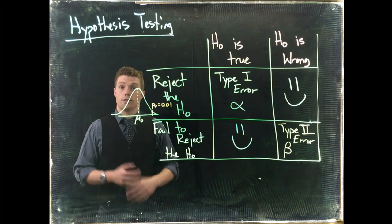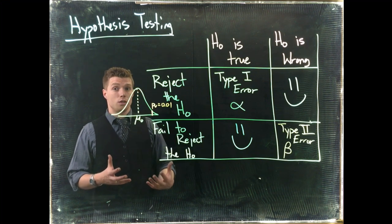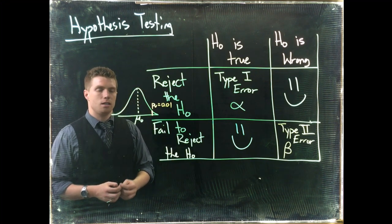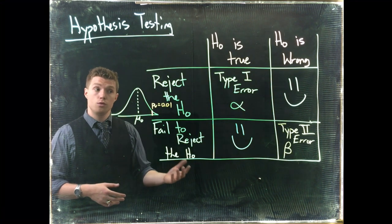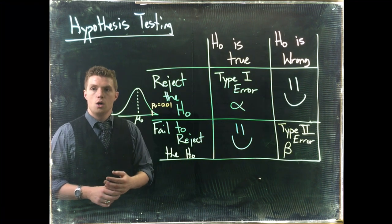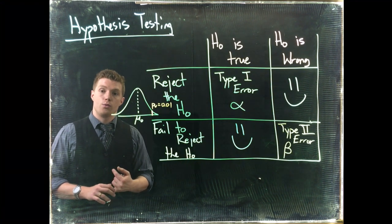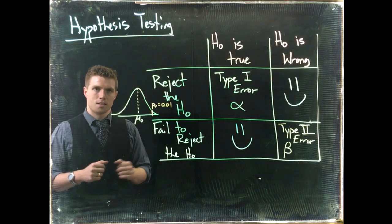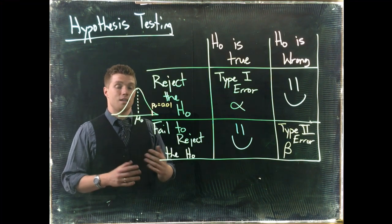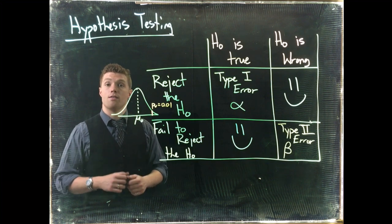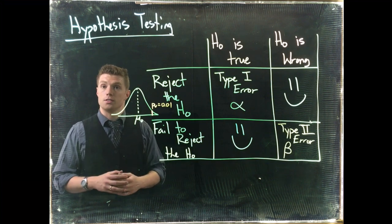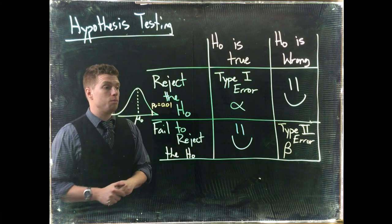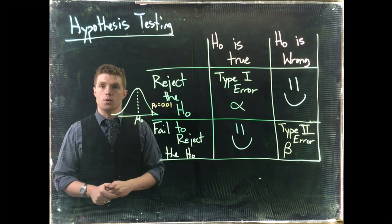Type 2 error is a little bit more complicated. I'm going to take another video to show you visually what the Type 2 error is. But in order to actually improve Type 2 error, or beta, in the context of this class we're really left with just increasing the sample size. We need a bigger sample size, and I'll show you that when we talk more about Type 2 errors.